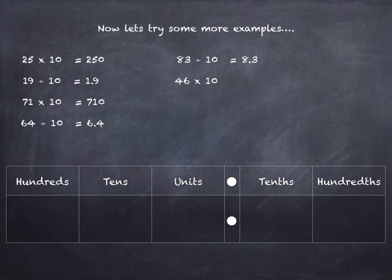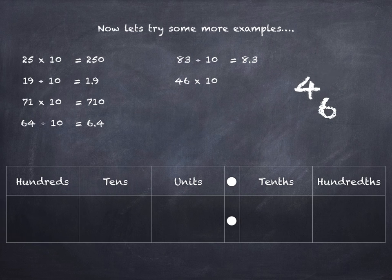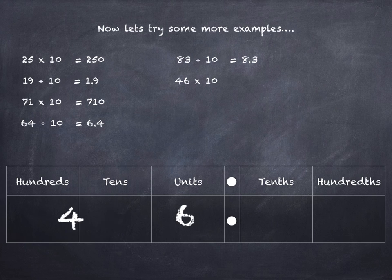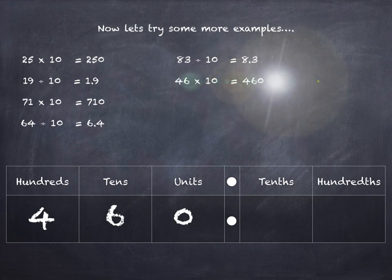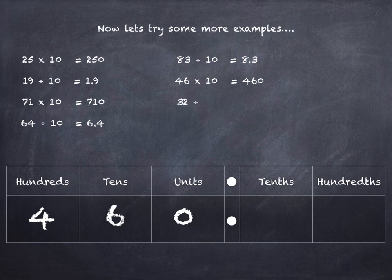46 times 10. There's our 4 and 6 going into the tens and units columns. We move them one place each to the left. There's a zero placeholder. 46 times 10 is 460.